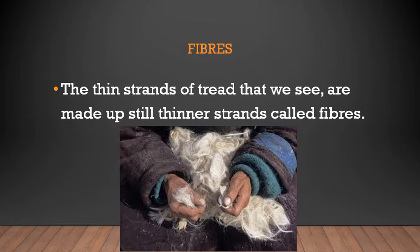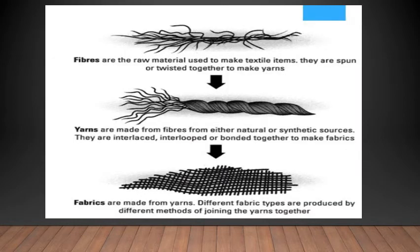The thin strands of thread that we see are made up of thinner strands called fibers. Fabrics are made up of yarns, and yarns are further made up of fibers. Here in the picture, you can see that fibers are the raw material used in making textile items. They are spun or twisted together to make yarns. From fibers we make yarns, and from yarns fabrics are made. Fabrics are made from yarns by interlacing, interlooping or bonding them together. Different fabric types are produced by different methods of joining the yarns together.